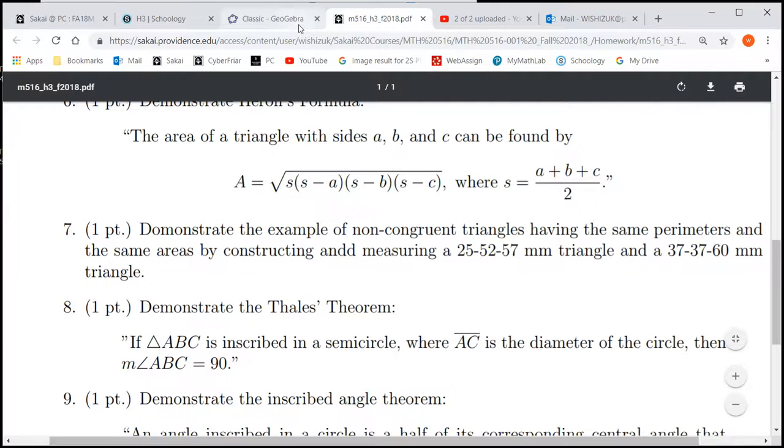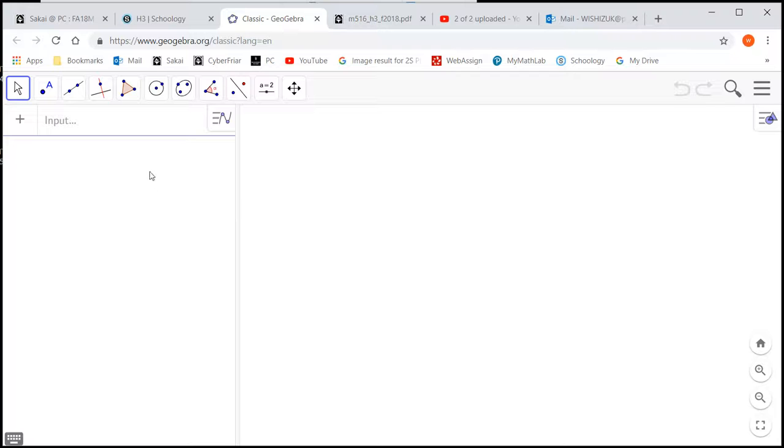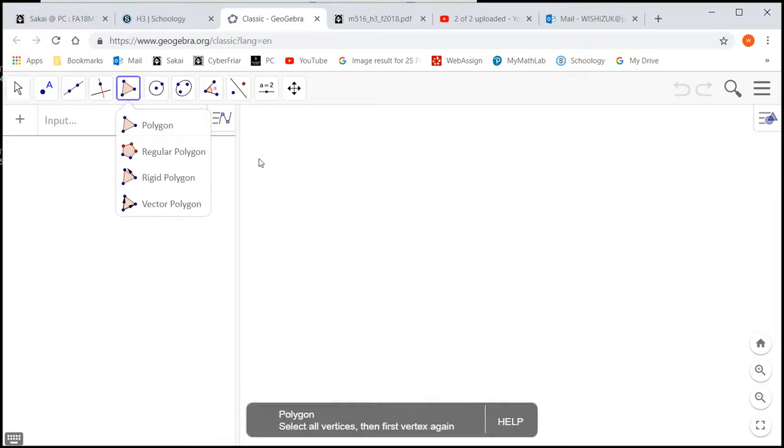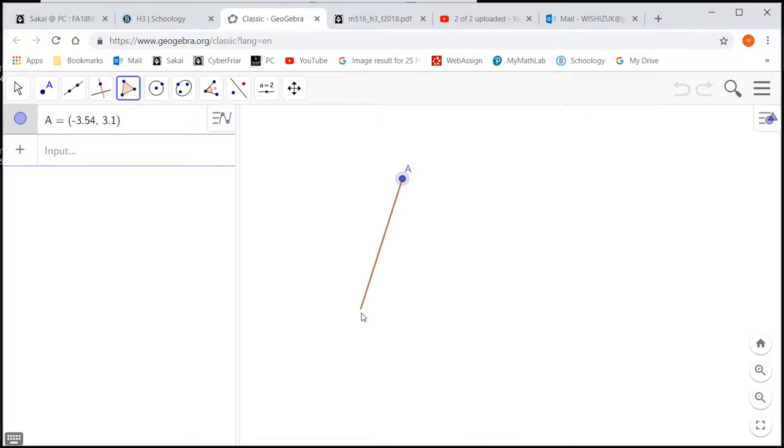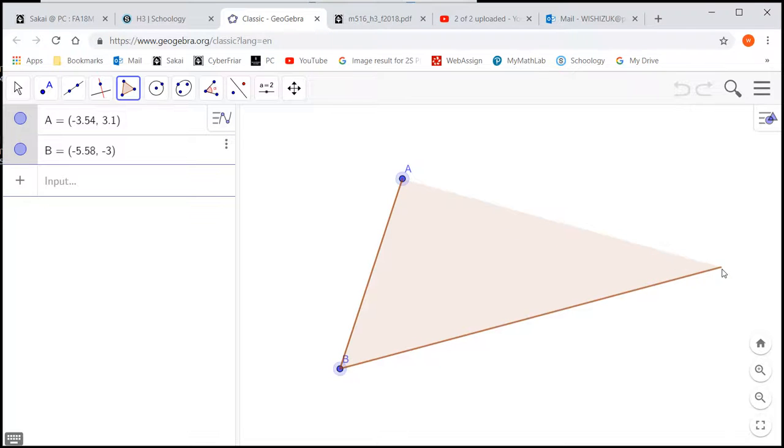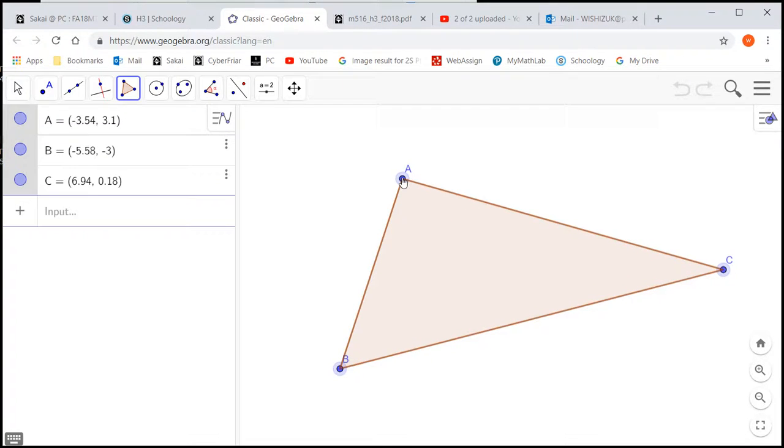So let's demonstrate that. We need a triangle, so I'm going to use this polygon tool to draw a random triangle. Here's A, B, and C.